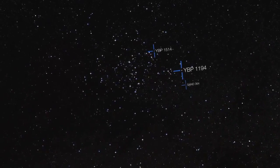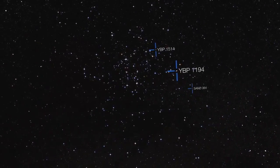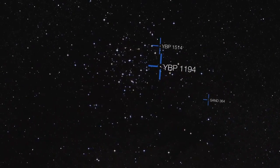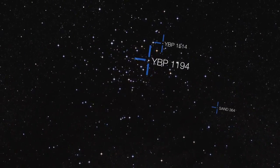Astronomers using ESO telescopes and others around the world have found three new planets orbiting stars in a cluster called Messier 67.